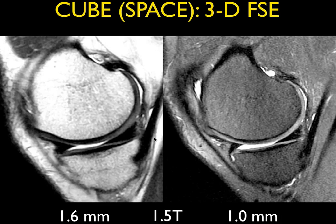This is a technique I like to use a lot — it's been available for the last couple of years from most manufacturers. Initially with Siemens and GE — with GE it's called CUBE, with Siemens it's called SPACE. This is a 3D spin echo acquisition and you can do it with T2-weighted imaging, as shown on the left, and with fat suppression on the right.